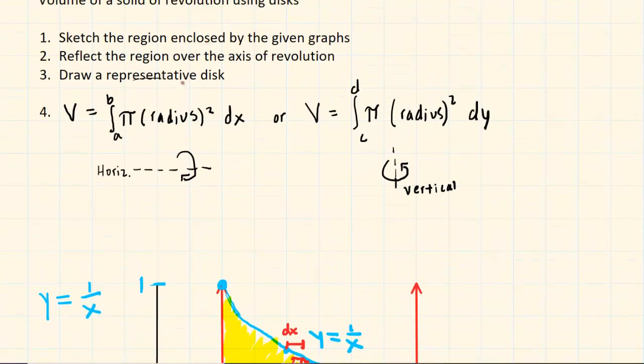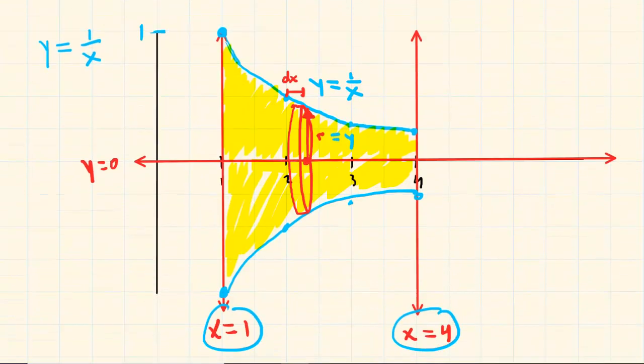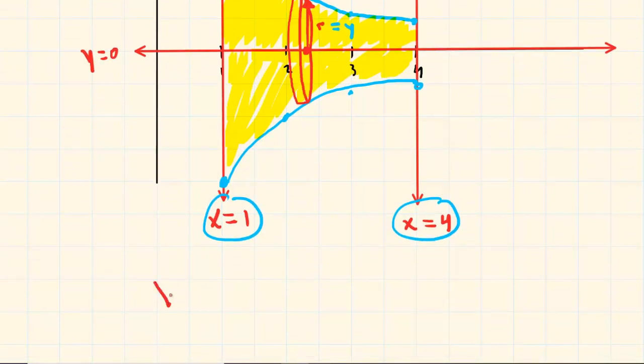The fourth step is to apply one of these two formulas for disks. Basically, if you're revolving around a horizontal axis of revolution, then you're going to be using the first formula, and if you're revolving around a vertical axis, you use the second formula. In this case, our axis of revolution is the x-axis, so it's a horizontal line, and therefore we're going to be using the first formula here.